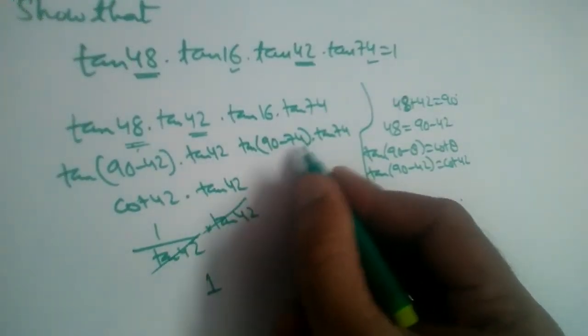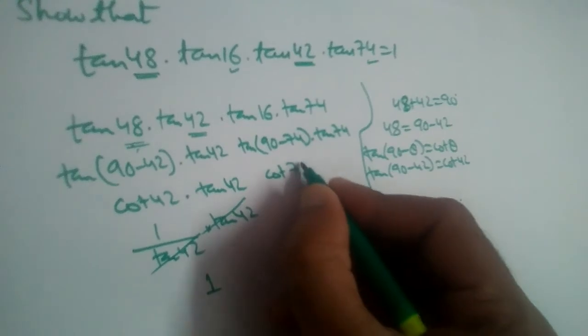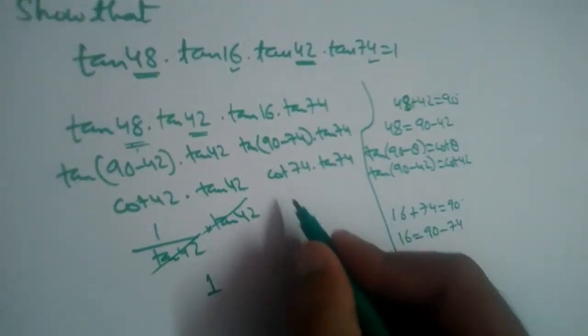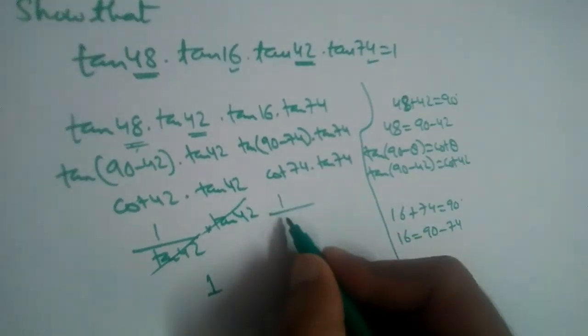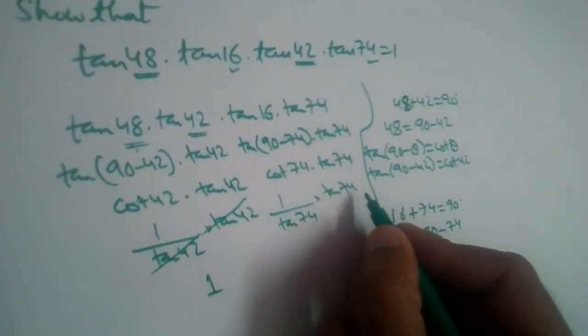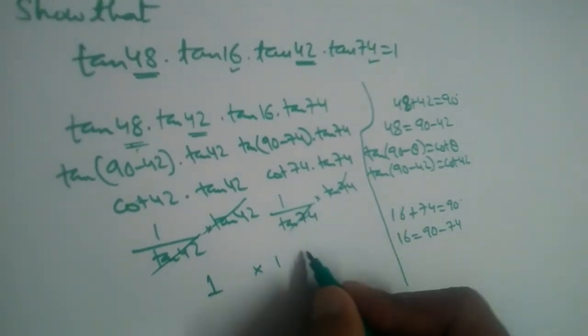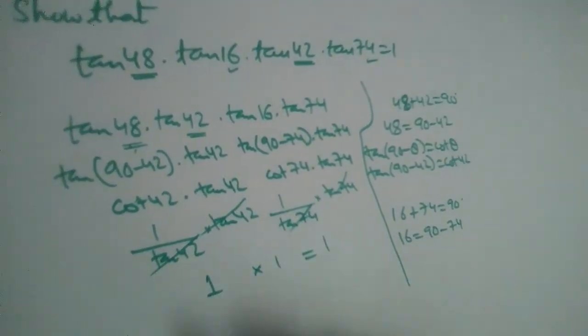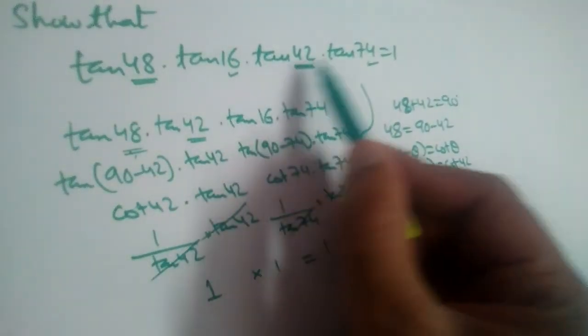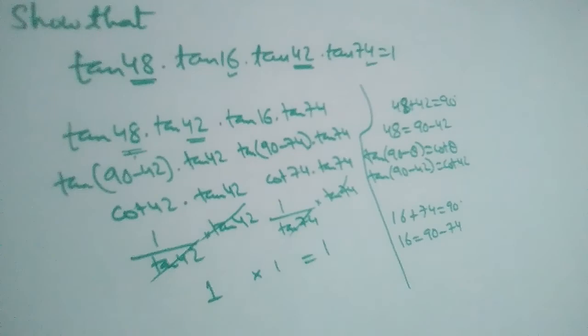Now tan(90° - 74°) is cot 74° multiplied by tan 74°. We are writing cot as 1 by tan. This will also be cancelled, it will be equal to 1. So 1 times 1 is 1. Therefore tan 48° tan 16° tan 42° tan 74° is equal to 1.